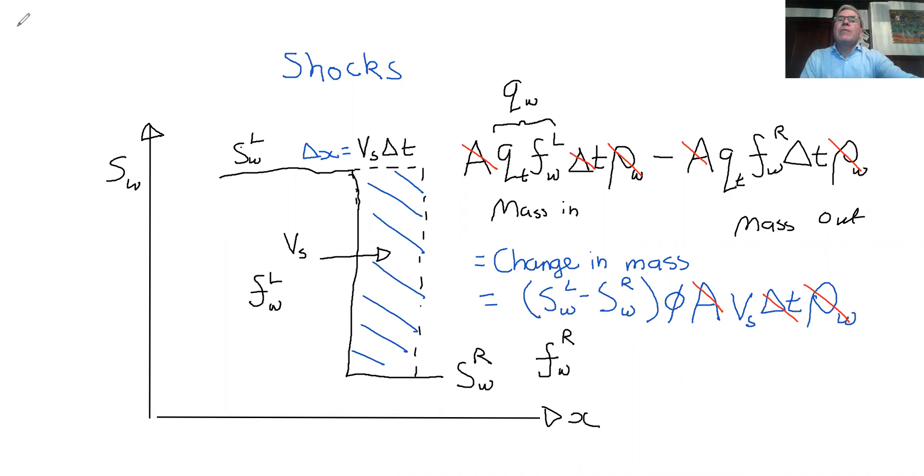And so we can write an expression up here, V_shock. We've got a change in F and a Q_t. So it's a Q_t. F_W left and F_W right. That's these terms.